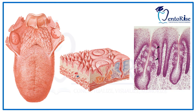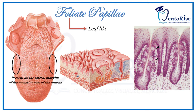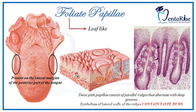Coming to the last type of papillae — the foliate papillae. Foliate, as the name implies, means leaf-like. These papillae are present on the lateral margins of the posterior part of the tongue — note the posterior part, not the posterior third; there is a difference between the two. These papillae consist of parallel ridges that alternate with deep grooves. The taste buds in these papillae are present on the lateral walls of the ridges.